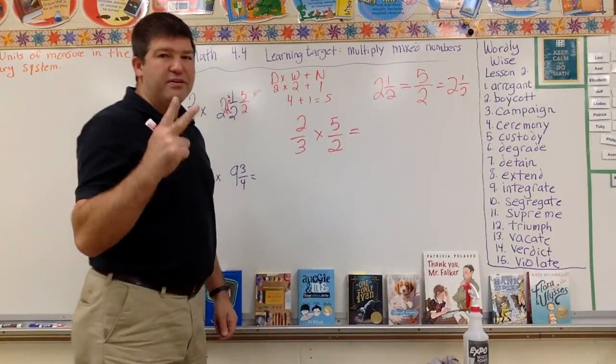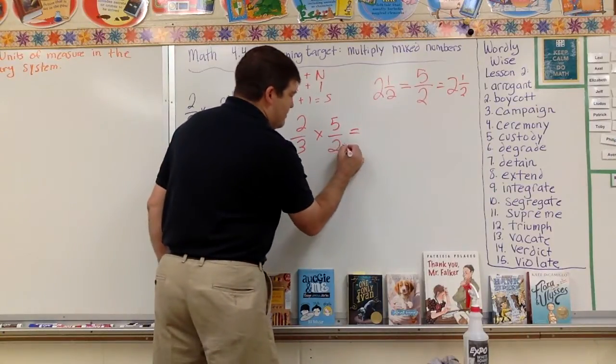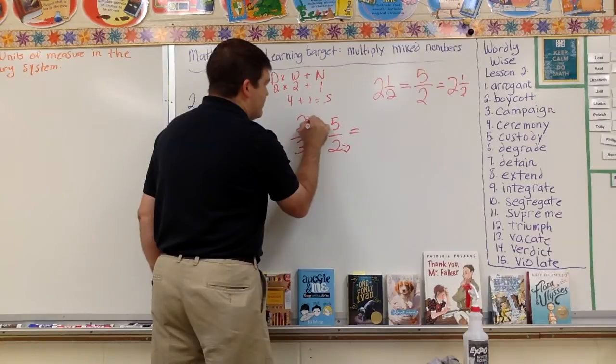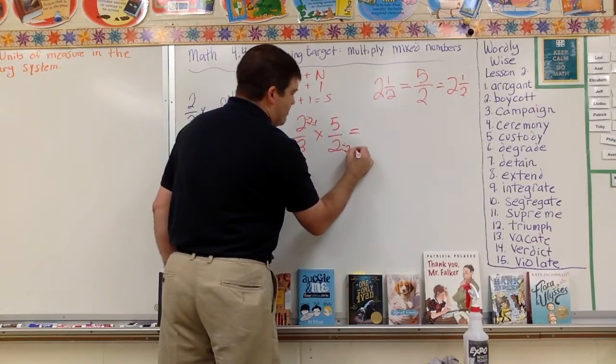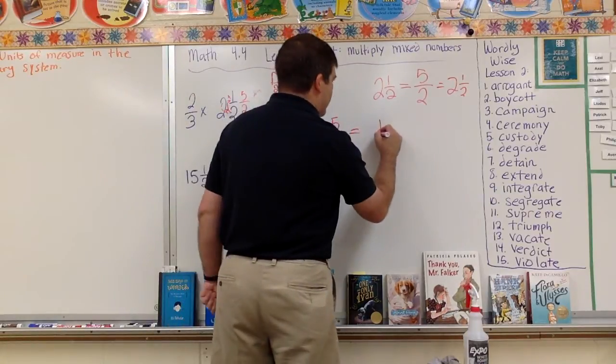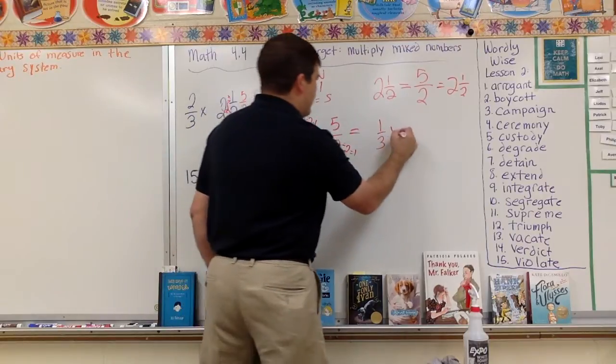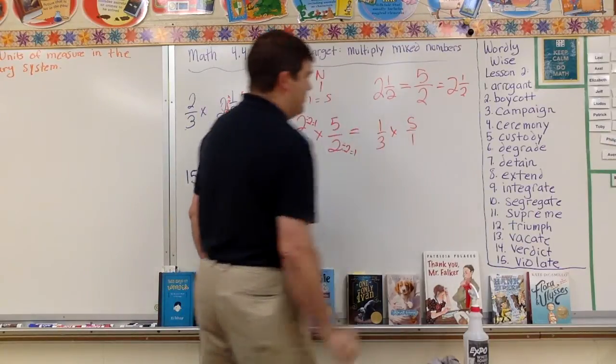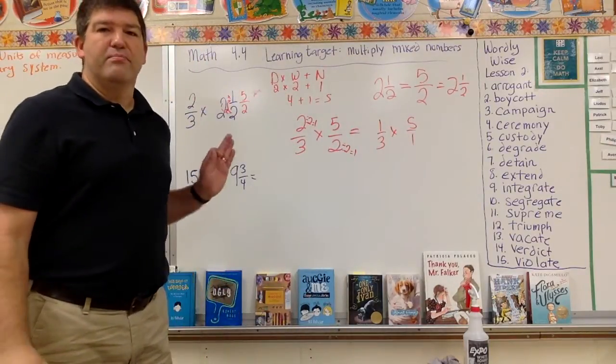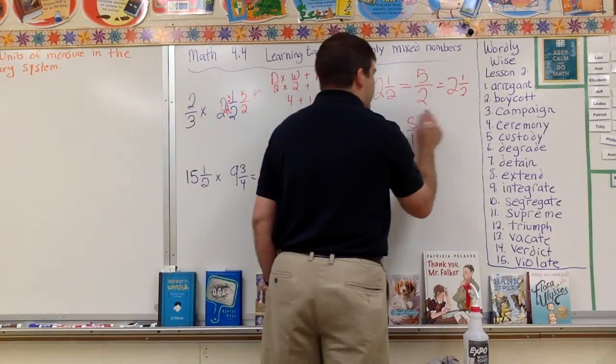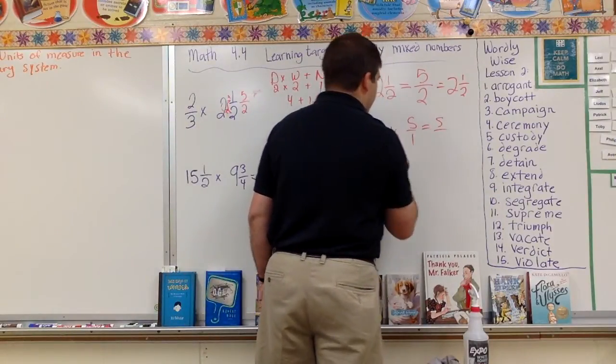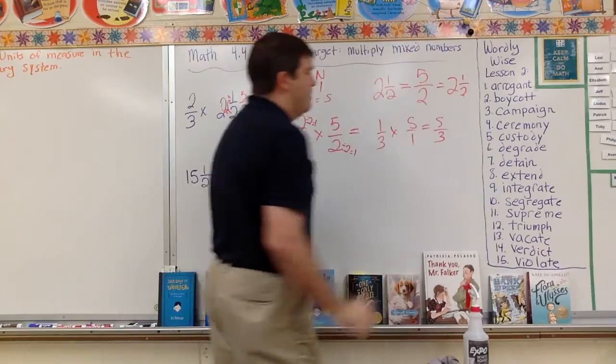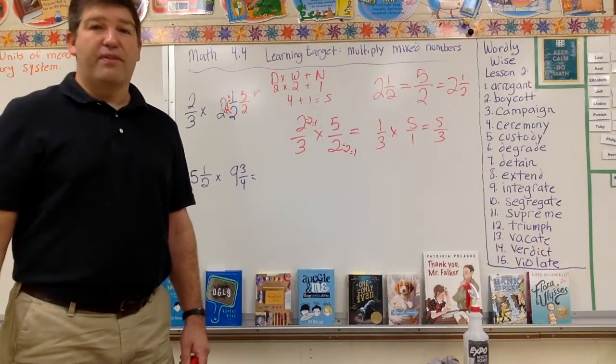This two and this two, I know that two goes into both of those. Two divided by two, two divided by two, equals one, equals one. So now I have one third times five over one. Now I just multiply across. One times five is five. Three times one is three. Five over three.